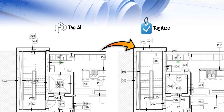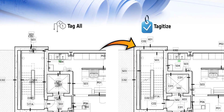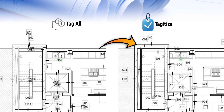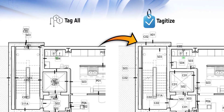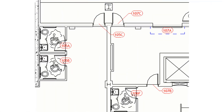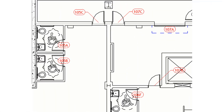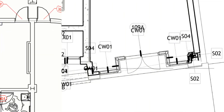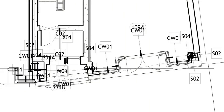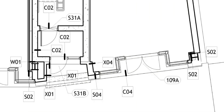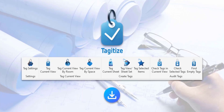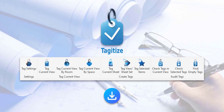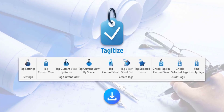This video is sponsored by Taggatize — the easiest way to run tag all on multiple Revit views and sheets. Also say goodbye to overlapping tags. Taggatize will handle that for you. Try Taggatize completely for free using the link in this video's description.